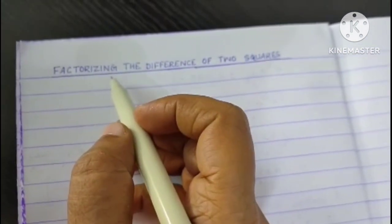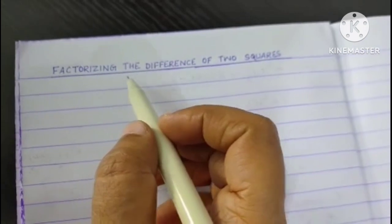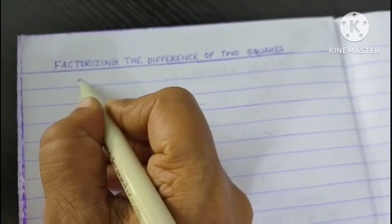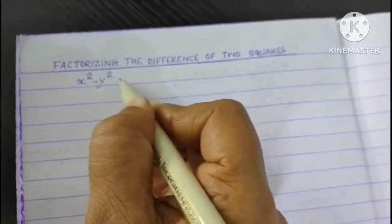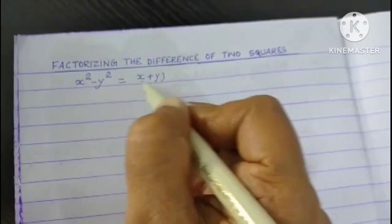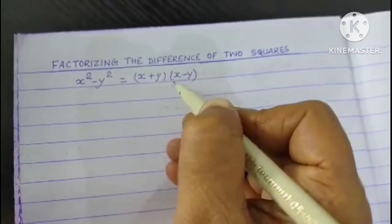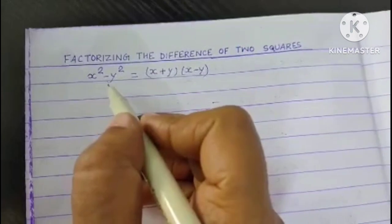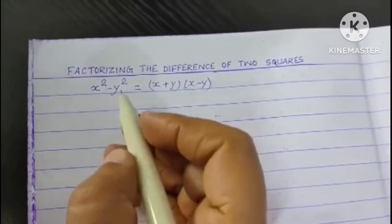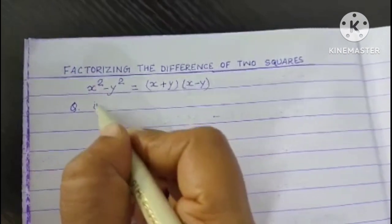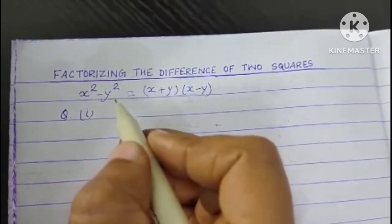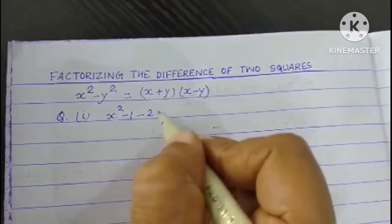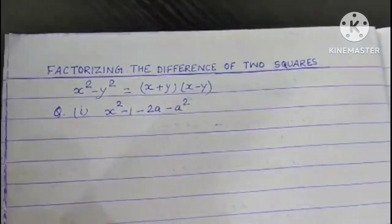The third type of factorization is factorizing the difference of two squares. The formula under this topic is very simple: x² minus y² equals (x + y) multiplied by (x - y). We all know this from very early classes. Let us solve some questions. Question number one: let us take x² - 1 - 2a - a².